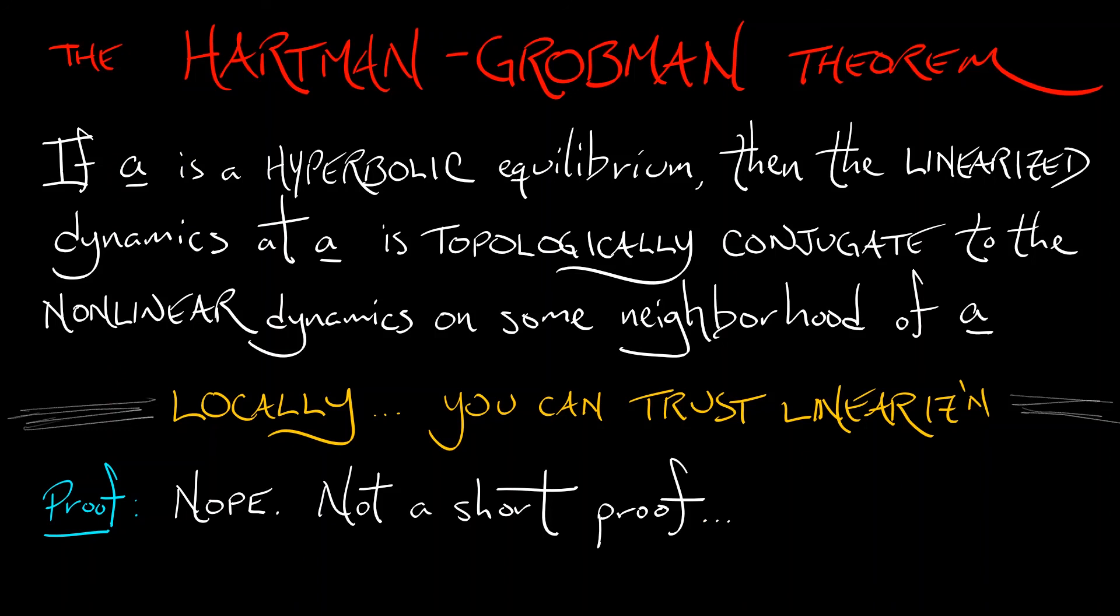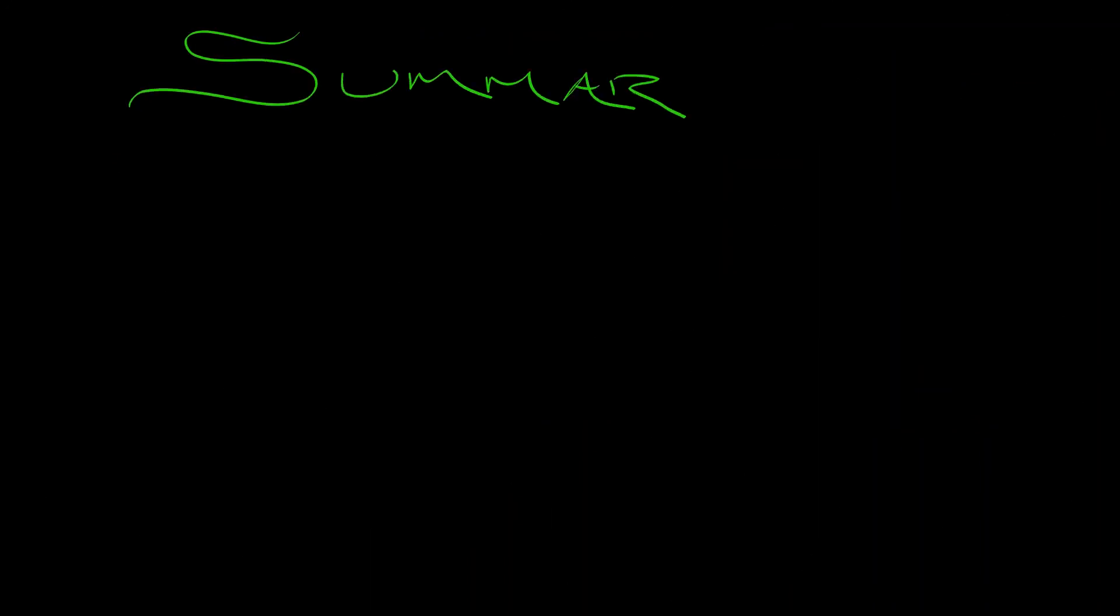There are a lot of interesting side issues here about the degree of smoothness that your topological conjugacy can have. We're not going to go into that. And what we are going to do is finish this long story with a few morals. First of all, hyperbolicity is the key. That's what makes linearization really work.